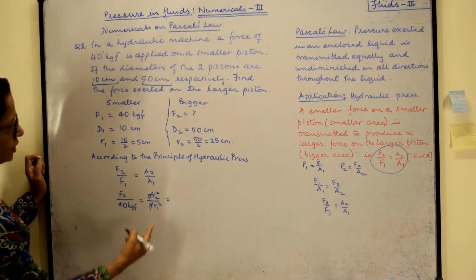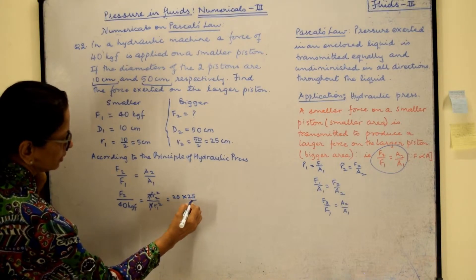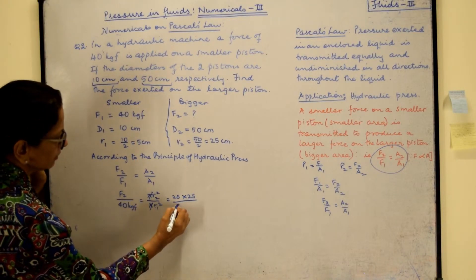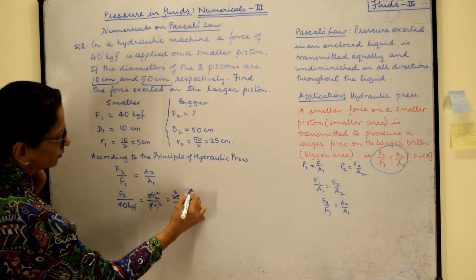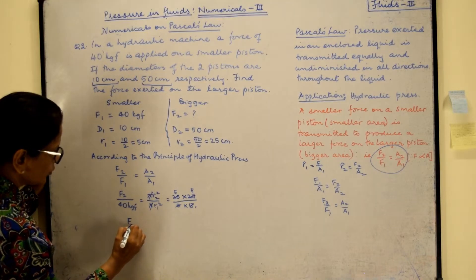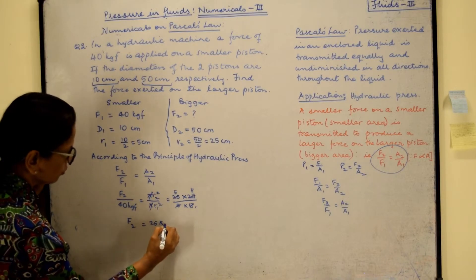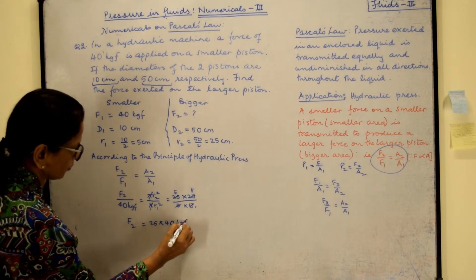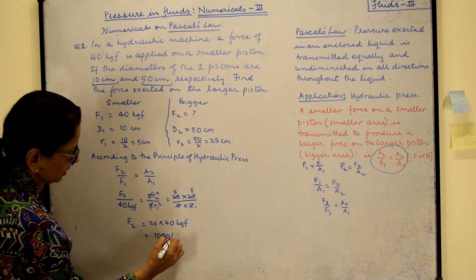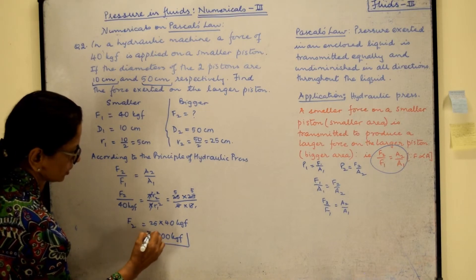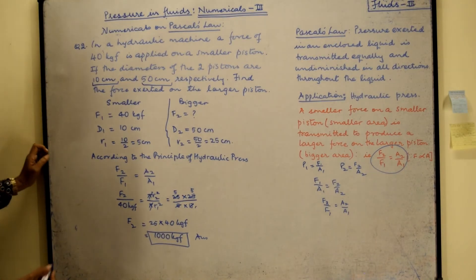And if you substitute out here immediately R2 square will be 25 times 25 upon R1 is 5 times 5. And so you will see F2 will be equal to 25 here, and 40 crosses over. So that gives you 25 times 100, so 1000 kgf. And this is the force that is obtained on the larger piston. And that is our answer.